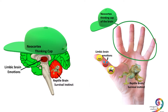In this model, the part of the brain that is in control is the outermost part still touching the palm. So where it's depicted currently, the reptile brain is in control. If you wrap the thumb over the reptile brain, then your emotional part of the brain is in control. And then if you wrap your fingers over the limbic brain, then your neocortex, or the thinking cap of the brain, is in control.